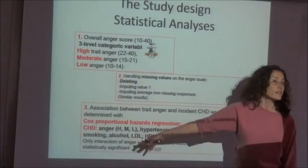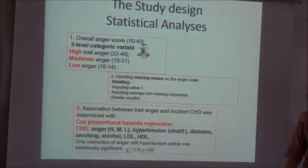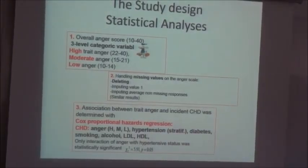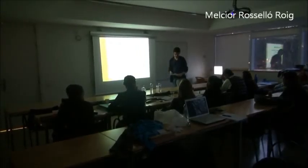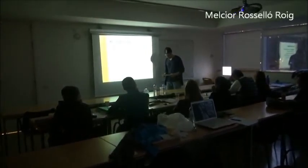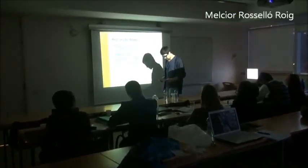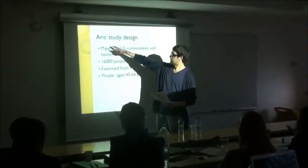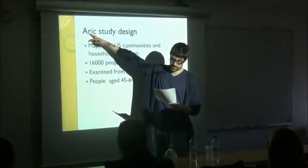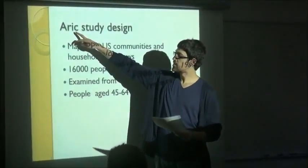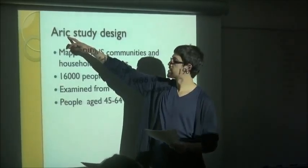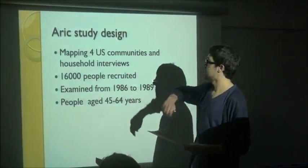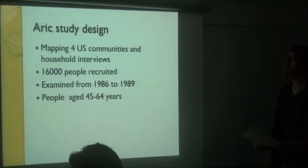And in this model we can see that some covariates — important covariates — are under the level of high, medium, or low, such as the level of hypertension. One of the things that was commented before is the atherosclerosis risk in community study design.